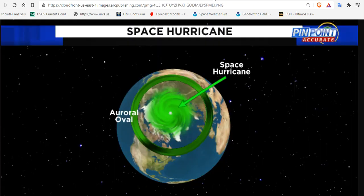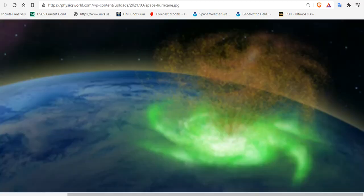An international team of scientists led by Shandong University in China analyzed observations made by satellites in 2014 to reveal a long-lasting hurricane resembling those in the lower atmosphere in the polar ionosphere and magnetosphere with surprisingly large energy and momentum, despite otherwise extremely quiet geomagnetic conditions. Quite fascinating.